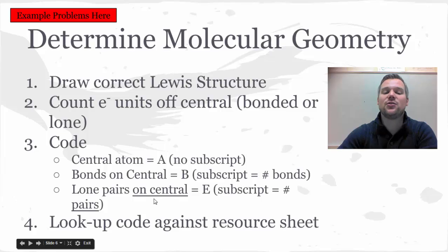Finally, lone pairs attached to the central atom only, only on the central atom, are going to be represented as a capital E. And then lone pairs can also have a subscript. So it might be like E or E2 or E3. The subscript one would be omitted for both B and for E.